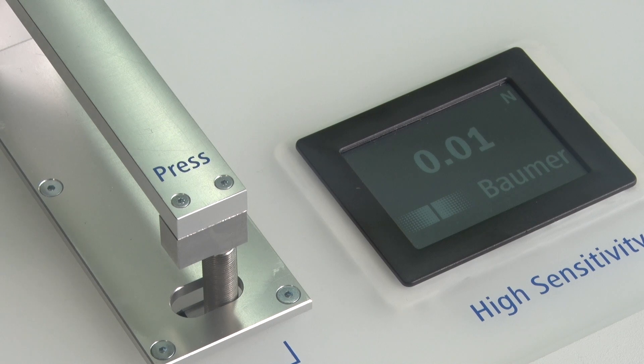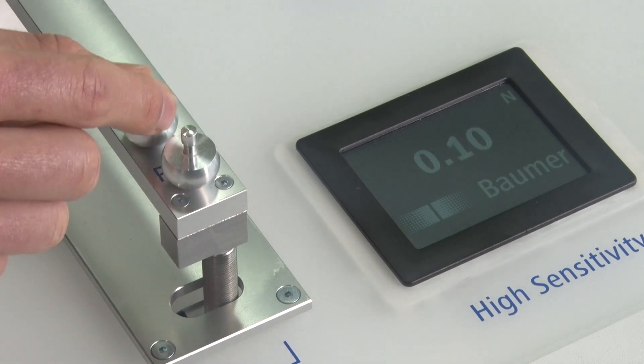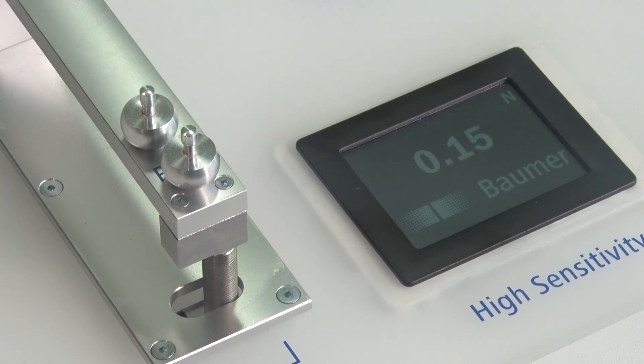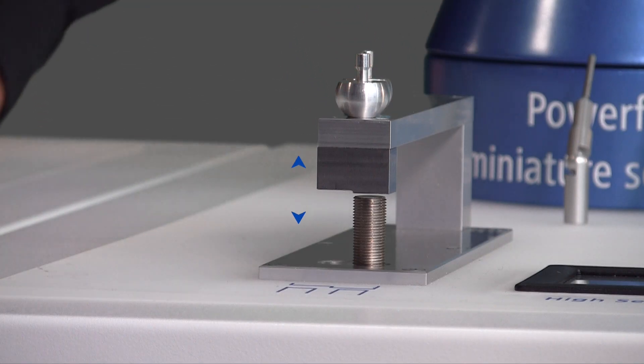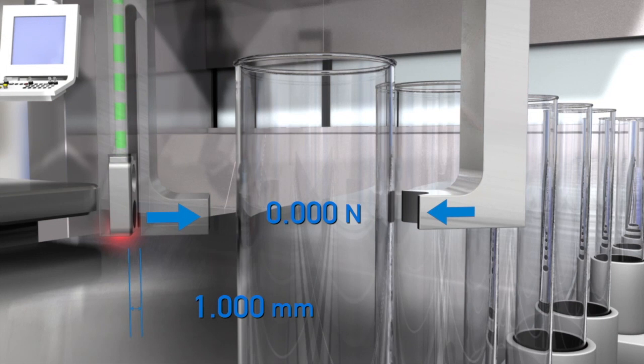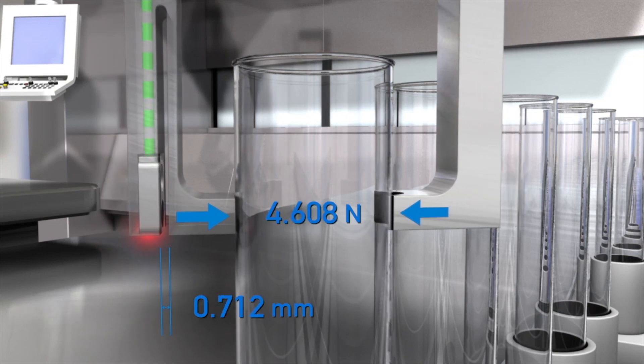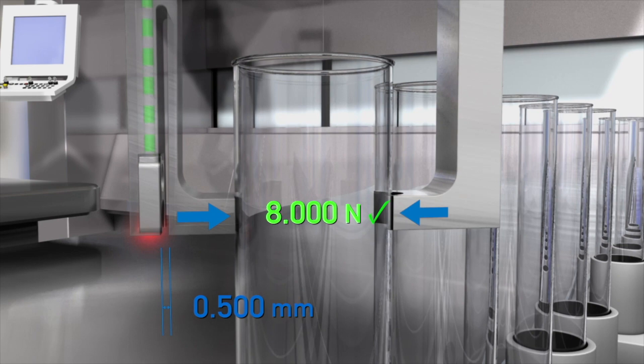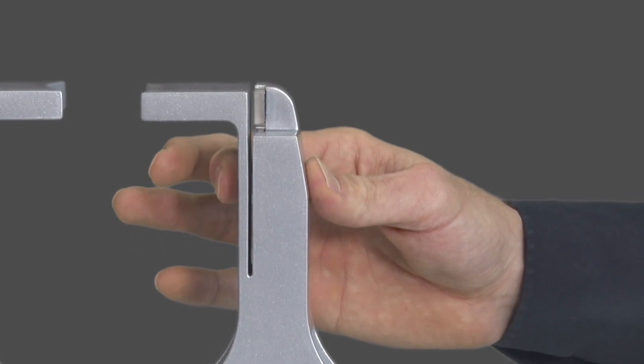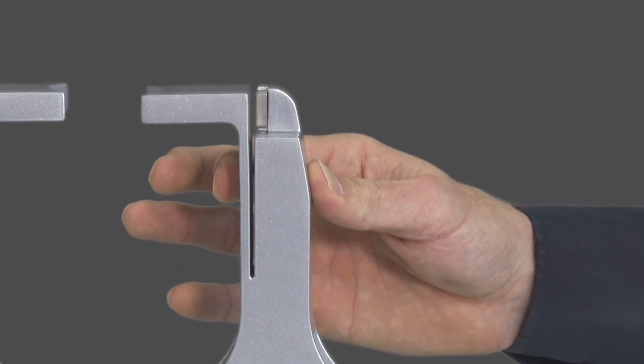High precision and reliable measurements are essential to identify the most minor changes in distance. Thanks to the high resolution, the sensors will capture the slightest change in distance that is not visible to the human eye. This capability can be used for indirect measurement of the gripping force.